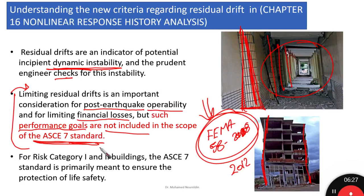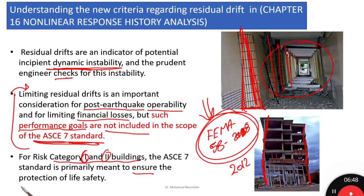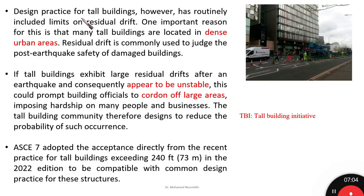Keep in mind that ASCE 7 is dealing primarily with the life safety limit state for Risk Category 1 and 2 buildings. If you do not know the meaning of Risk Category 1 and 2, please refer to the earlier videos where I have explained it. The ASCE 7 standard is primarily meant to ensure the protection of life safety. This is some understanding of residual drift, its consequences, and why it is important to be considered.